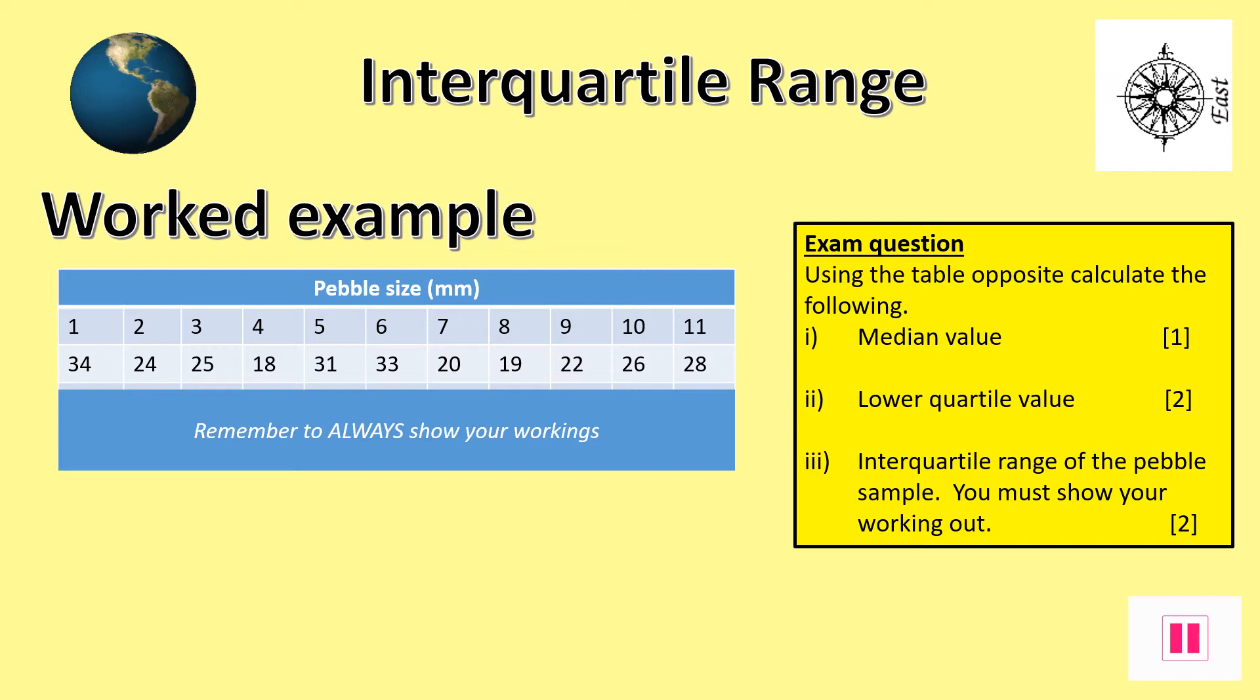The examiner sometimes will give you a set of data as can be seen on the screen. Here we have a sample of 11 pebbles. The question asks what is the median value and the interquartile range. You will also get a mark as it can be seen for showing how you calculated the answer. This is very important to include since you may get a mark even if you are wrong or lose a mark if you do not show this but are correct.